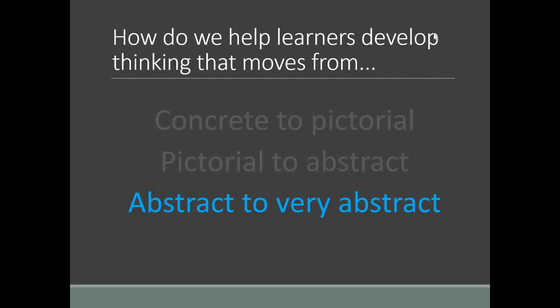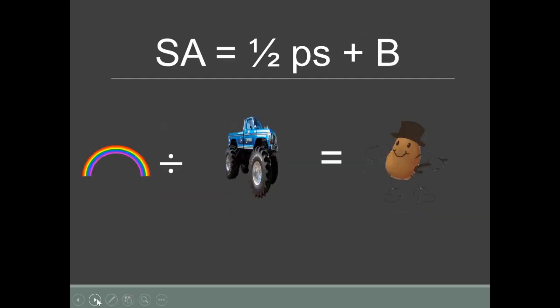Now we'll look at strategies to bridge from abstract to very abstract ideas and tools. Working with numbers is already abstract; working with symbols is abstract; working with abbreviations is even further removed from concrete reality. When I first looked at the formula sheet, there were formulas I needed help translating. We saw that quote from a student who said looking at the formulas is like reading Braille. Familiarity with things makes them more connected to the concrete and easier to manipulate. We're thinking about mathematical practice one — make sense of problems and persevere — and practice four, model with mathematics, and practice five, use appropriate tools strategically.